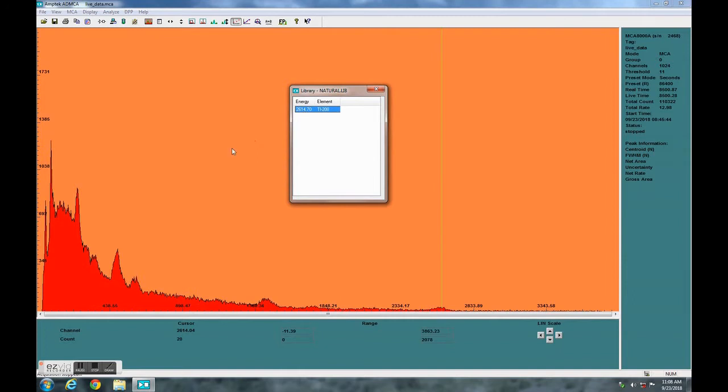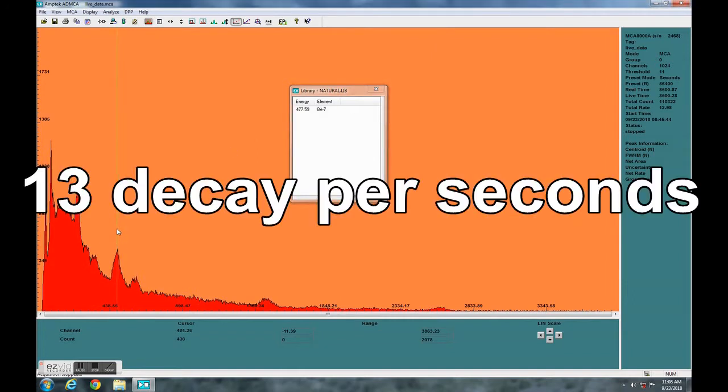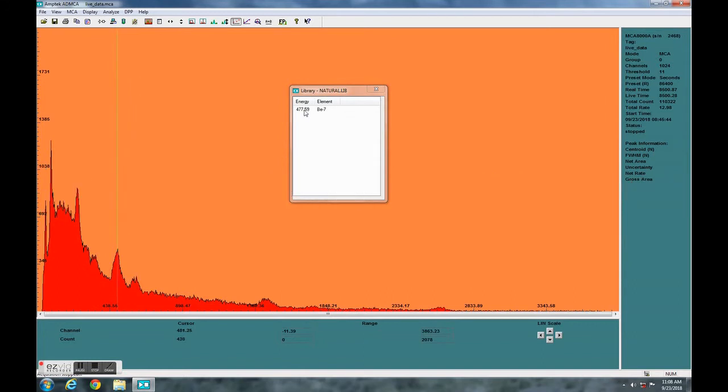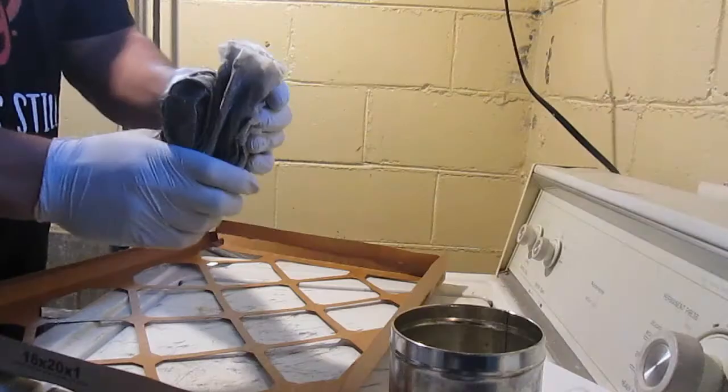Assuming that all counts are actually from the filter, which is not entirely accurate, we have our filter giving us about 13 becquerels, give or take. Since the detector is not 100% efficient and not every hit counted is from the filter, it's probably a bit higher than that.